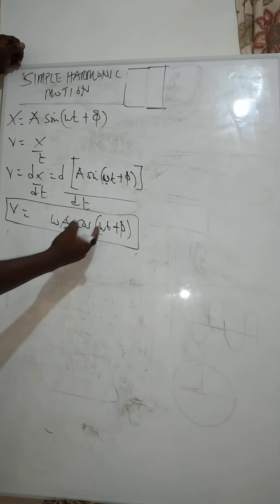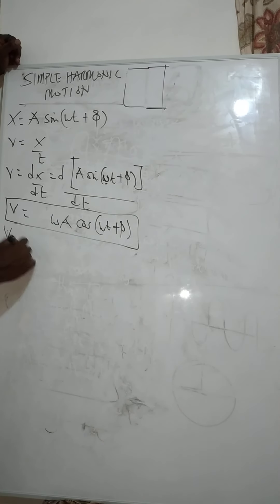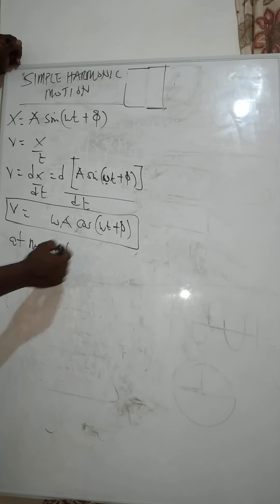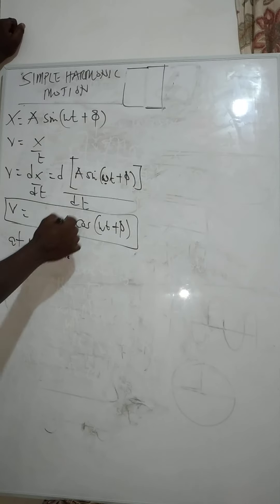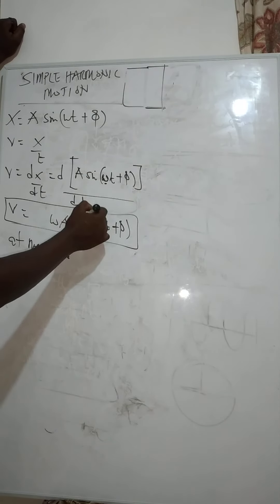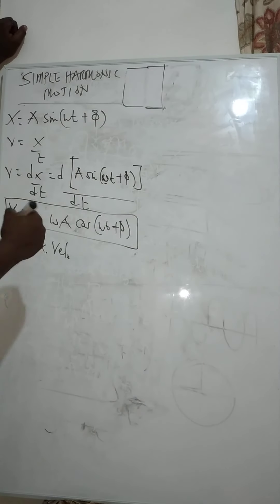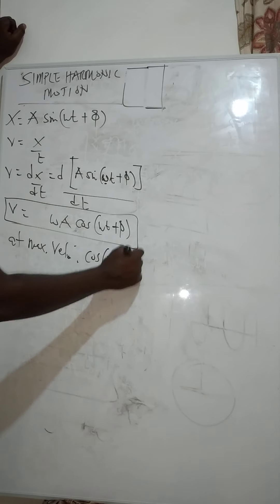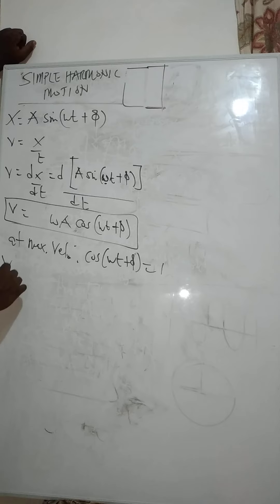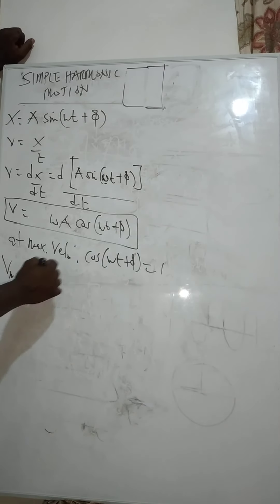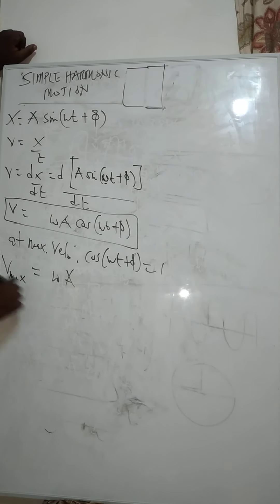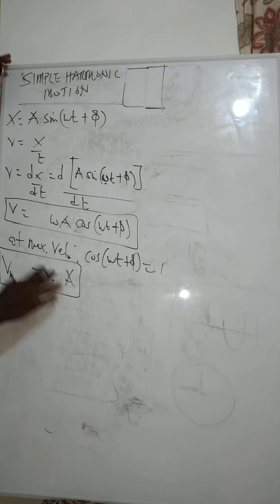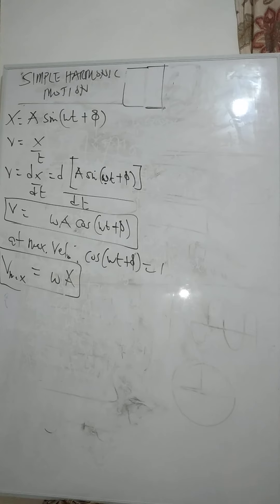The velocity for simple harmonic motion is v = ωA cos(ωt + θ). For maximum velocity, since cosine has a maximum value of 1, we need cos(ωt + θ) = 1. Therefore the maximum velocity v_max = ωA.